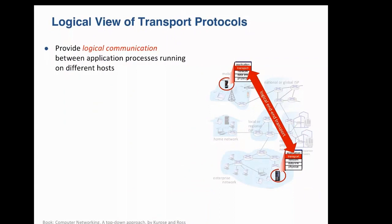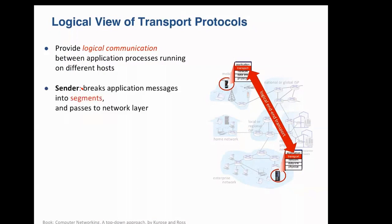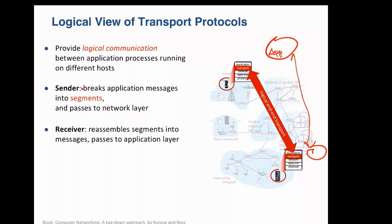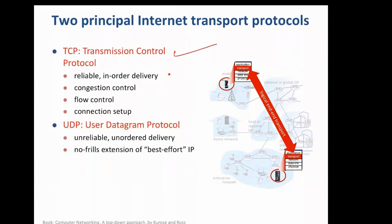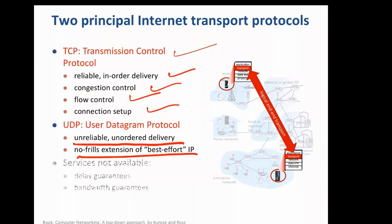The transport layer provides a logical connection between two application endpoints. The application doesn't care what kind of network is being used — whether Ethernet or something else — it just wants its bits to reach the other end. The sender breaks the data from the app into segments, forms TCP or UDP packets with headers, and gives them to IP. TCP provides reliability, congestion control, flow control, and connection setup. UDP provides unreliable, unordered delivery — essentially best-effort IP with just port-based multiplexing and demultiplexing.